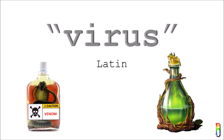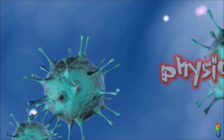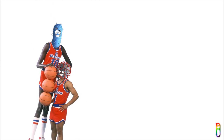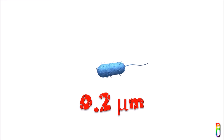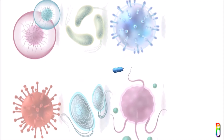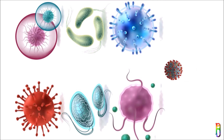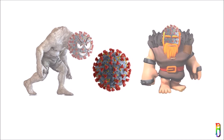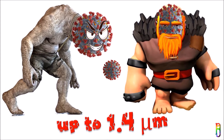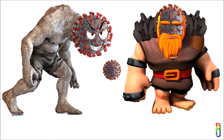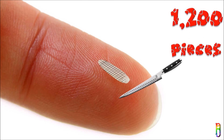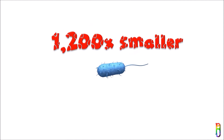Bacteria is like a giant if you compare them to viruses, but both are microorganisms which means we cannot see them with the naked eye. The size of bacteria averages from 0.2 to 2 micrometers in diameter, though some range from 1 to 10 micrometers. An average virus has a size between 20 to 400 nanometers. To put it into perspective, if you take a single grain of rice and slice it into 1,200 pieces, one slice would equal the average size of a single bacteria.